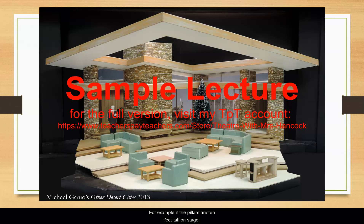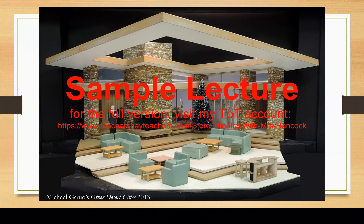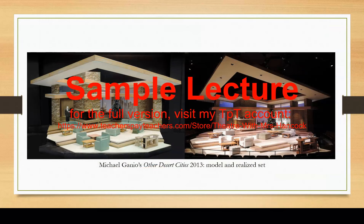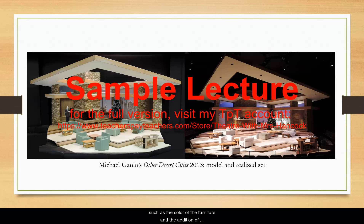For example, if the pillars are 10 feet tall on stage, then the model's pillars would be 5 inches tall. The model shows all major set pieces, including props like tables and chairs. There is a figure to show scale. Here we see the model side-by-side with the finished product. While some details have changed, such as the color of the furniture and the addition of lights to the ceiling, it is largely just like the model.